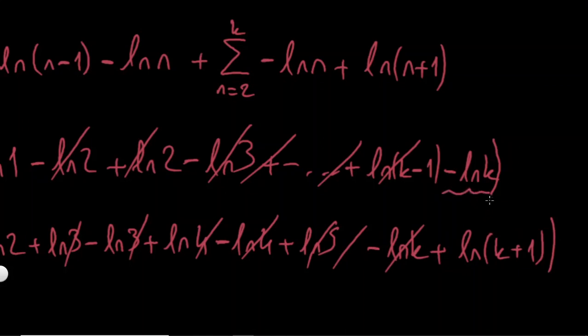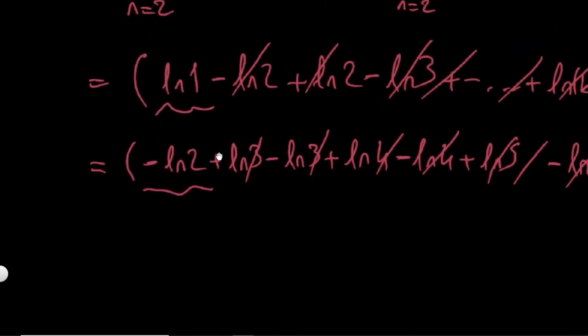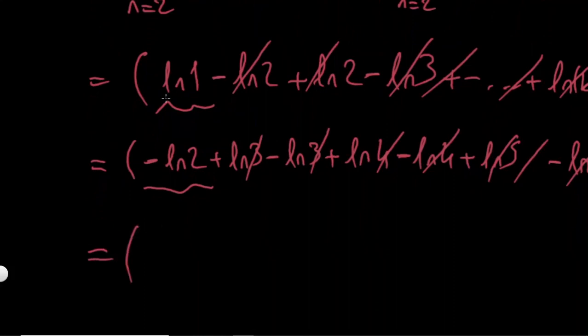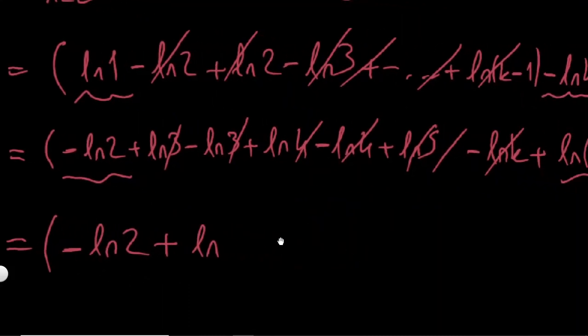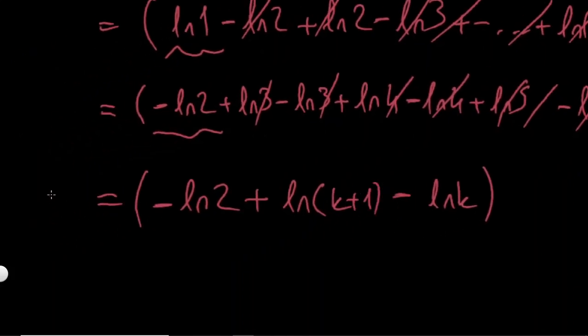If I look, I have minus ln k left here, ln k plus 1 left here, ln 1 left. And minus ln 2 is left here. Let's group them. ln 1 is 0, so I'm not gonna write. I have minus ln 2 and I have plus ln k plus 1 minus ln k. This is sk.